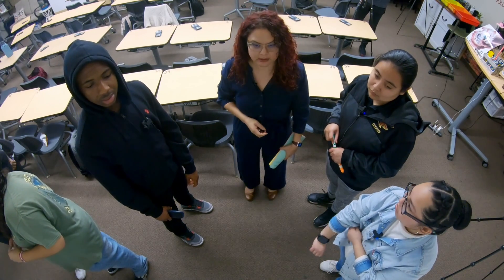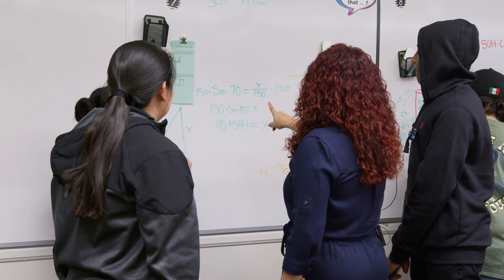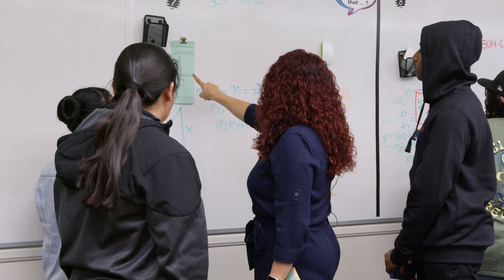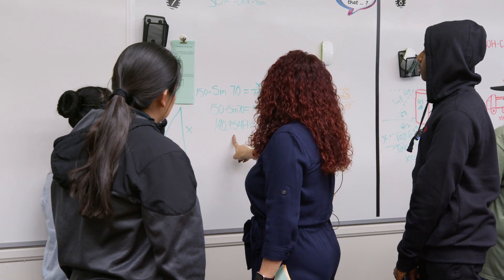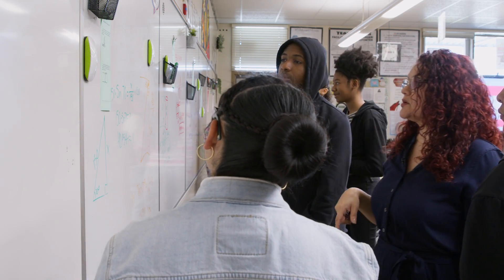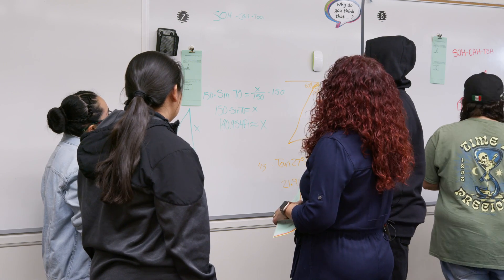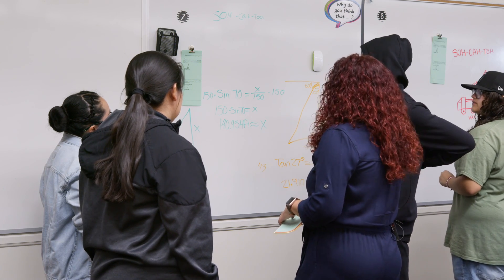Student: It's 150. Sine is opposite over hypotenuse, so that gives you 140.54. But the question asks to what height on the building will the ladder reach, so the answer is 140. It's important for students to see problems being solved in different ways, so I had the group that solved it differently share out so other students can learn there's not just one way to solve a problem.